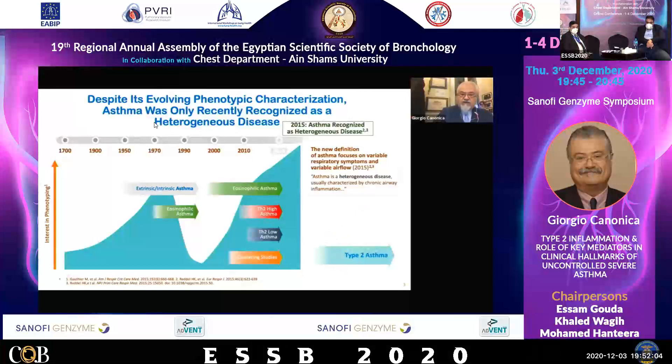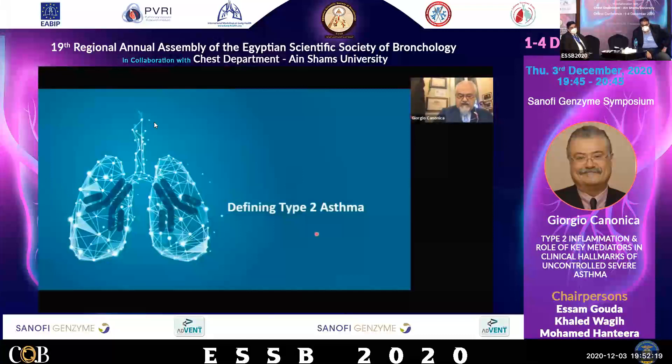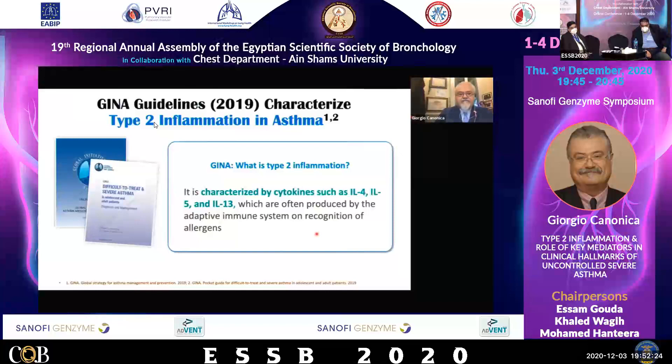Because more recently, we are talking about a different paradigm — type 2 asthma. This came since a few years, also recognizing the heterogeneity of asthma. Let me try to define asthma. Well, asthma as type 2 was defined by GINA.